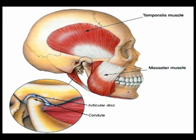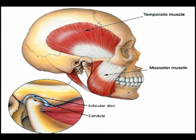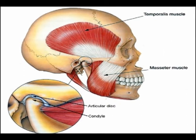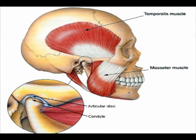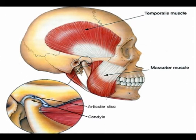An articular disc permits a more even distribution of forces between the articular surfaces of the bones, increases the stability of the joint, and aids in directing the flow of synovial fluid to areas of the articular cartilage that experience the most friction.